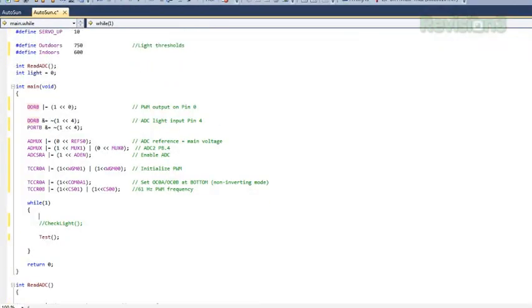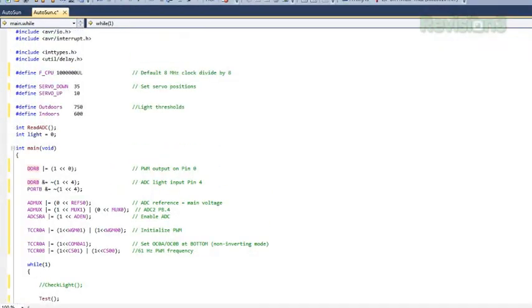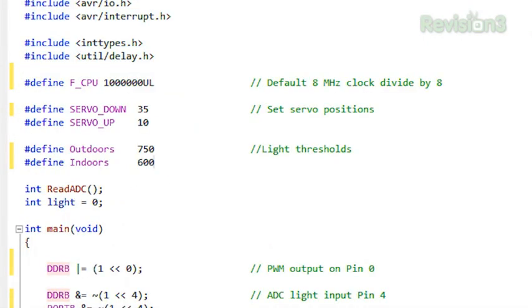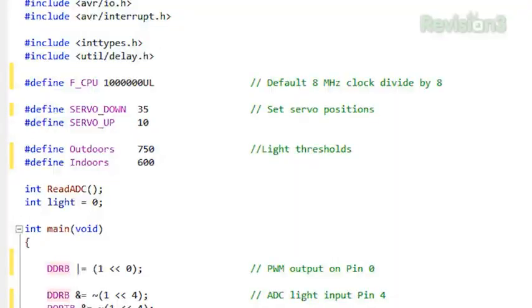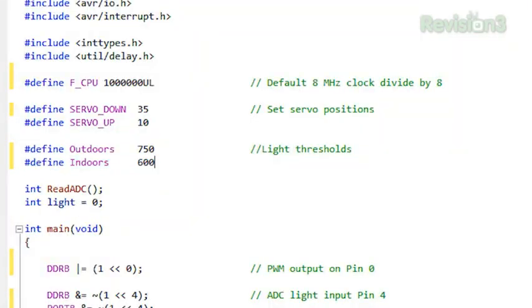We include all the libraries that we need, and we also set some constants right here. We have the frequency of the CPU. The default internal frequency is 8 MHz, but it has a divide by 8, so they actually ship at 1 MHz, which is good because it'll consume less power. Then we have the constant of the servo down position, the servo up position for the glasses. Indoors and outdoors refers to the light levels, at which point it will trigger. We tested that using a different ADC.